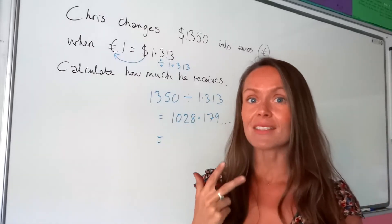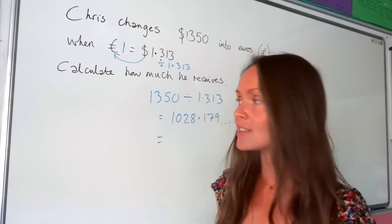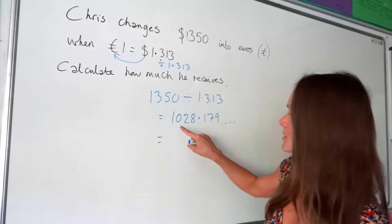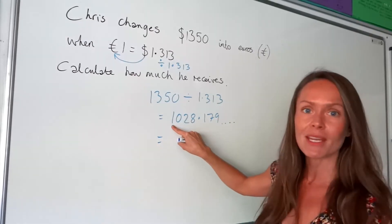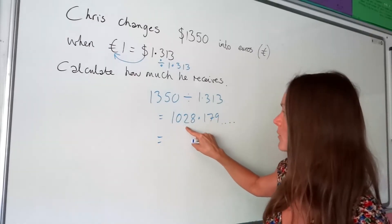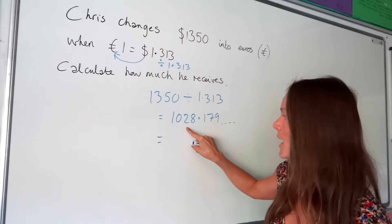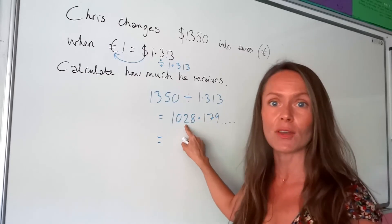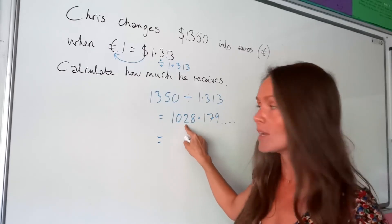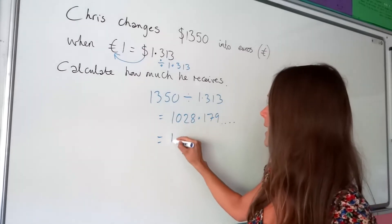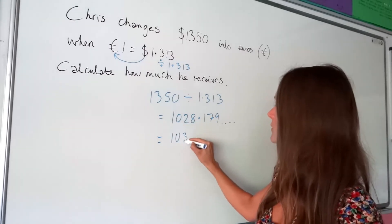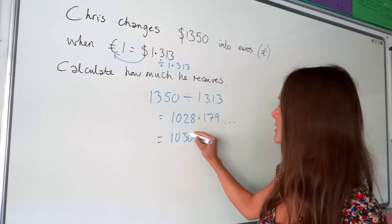Pop that in your calculator and hopefully you get 1028.1797. It's not an exact value, which means we need to round to three significant figures. Start counting from here: one, two, three — but the fourth figure rounds that third figure up to three, so we're left with 1030.